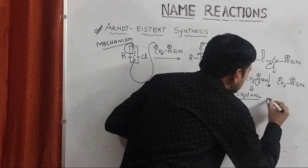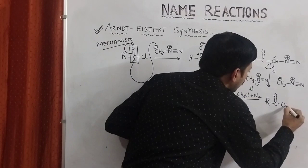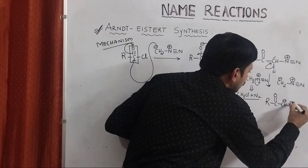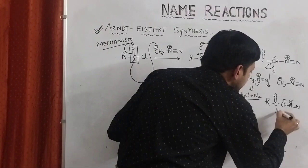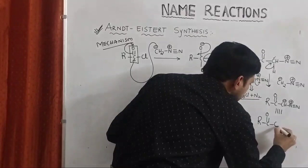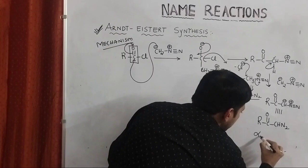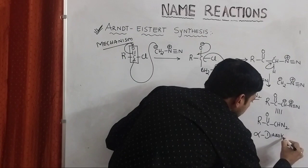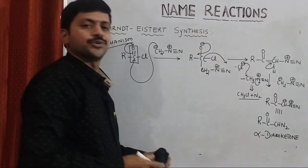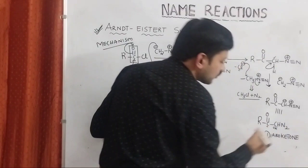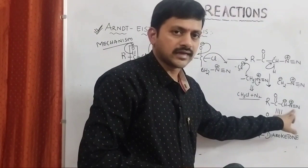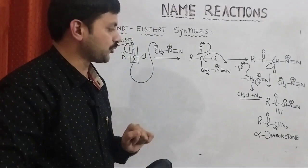Coming to the main moiety: RC(=O)-CH⁻-N≡N⁺. This can also be represented as RC(=O)CHN2. This is commonly called as alpha diazo ketone. Why? Because with respect to the C=O group, this carbon is called the alpha carbon. The alpha carbon containing the diazo group — that is why this is called alpha diazo ketone.